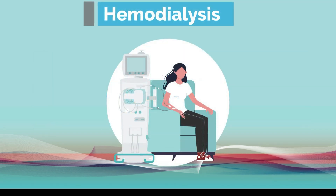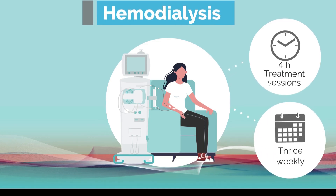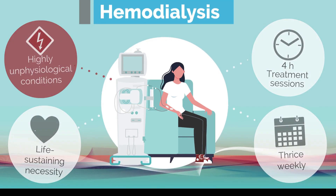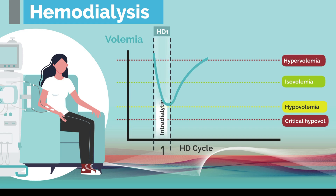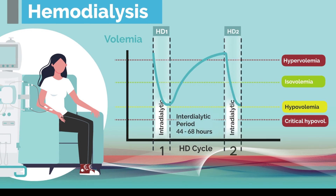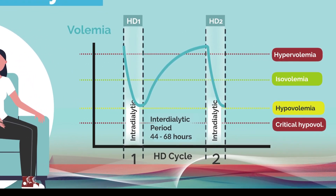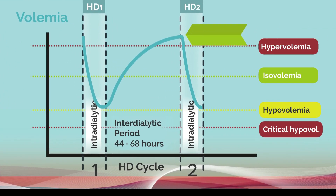The standard mode of hemodialysis delivery — four-hour treatment sessions thrice weekly — exposes patients to highly unphysiological conditions despite being a life-sustaining necessity. Hemodialysis-induced fluid volume fluctuations occur within the short four-hour dialytic periods as well as in the extended interdialytic phases of about 44 to 68 hours. The cyclic processes of intermittent hemodialysis regimes therefore bring additional difficulties in the management of end-stage kidney disease patients, related to repeated fluid accumulation and fluid depletion disorders.